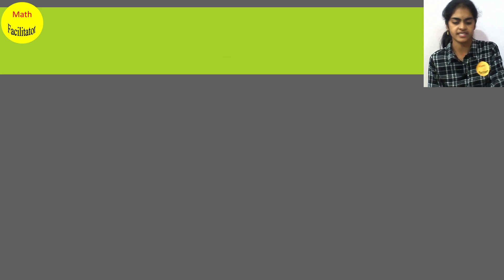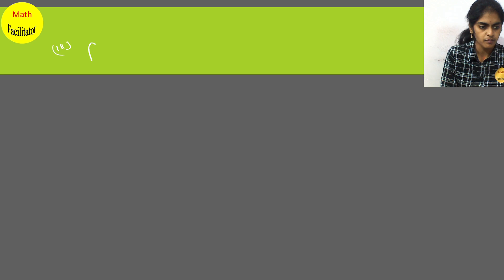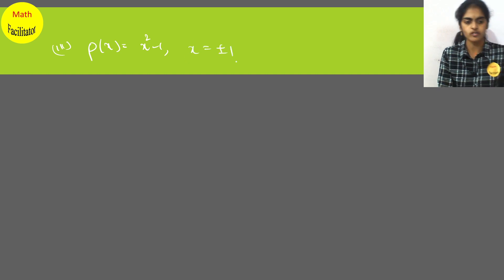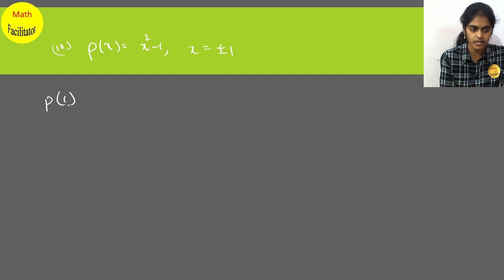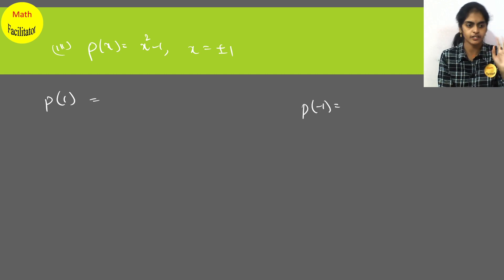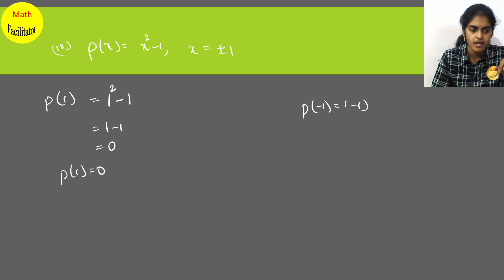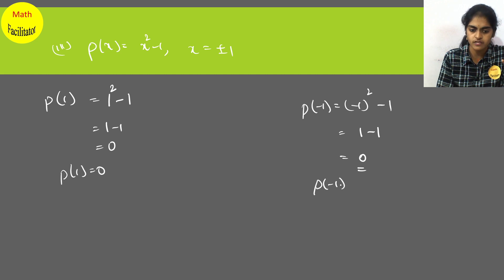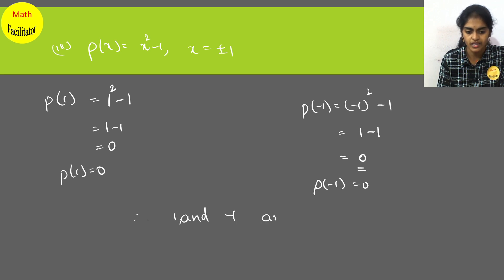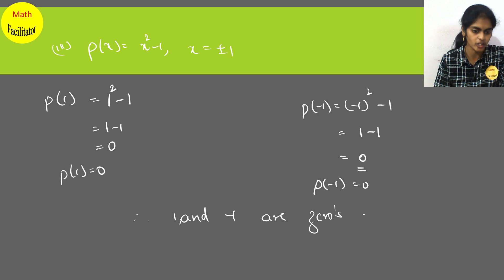For p(x) = x² minus 1, verify x = plus or minus 1. Substituting x = 1: 1² minus 1 equals 0, so p(1) = 0 and 1 is a zero. Substituting x = −1: (−1)² minus 1 equals 1 minus 1 equals 0, so p(−1) = 0 and −1 is also a zero. In both cases the answer is 0, so 1 and −1 are zeros of the polynomial.